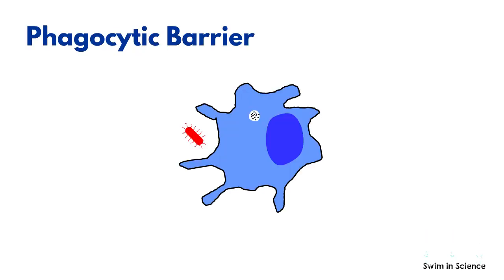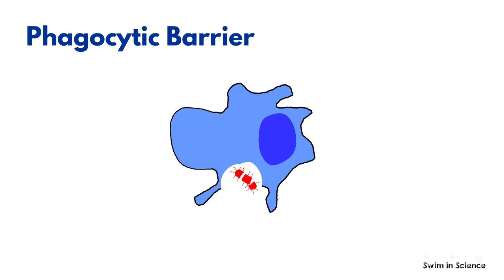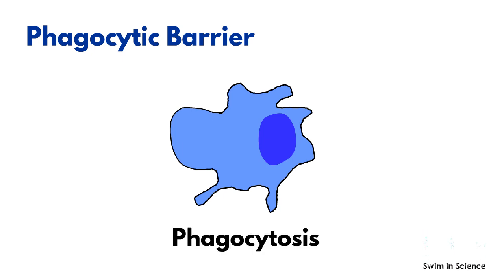The immune system contains many cells called phagocytes. Their function is to engulf or eat a pathogen and digest it inside. This process is called phagocytosis, and it eliminates pathogens from the body.